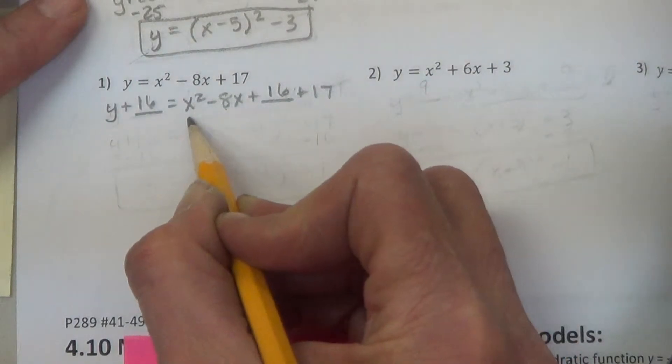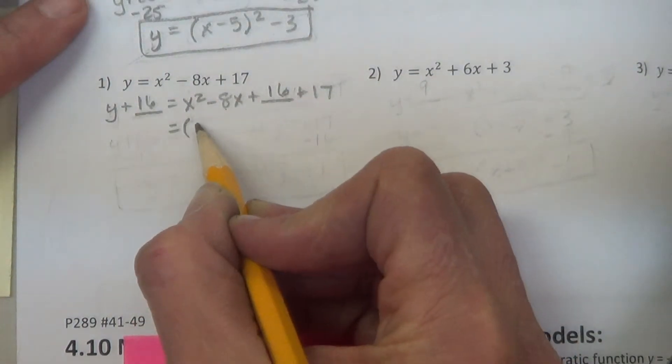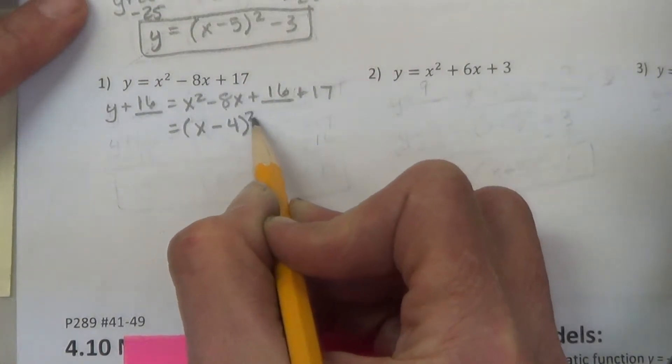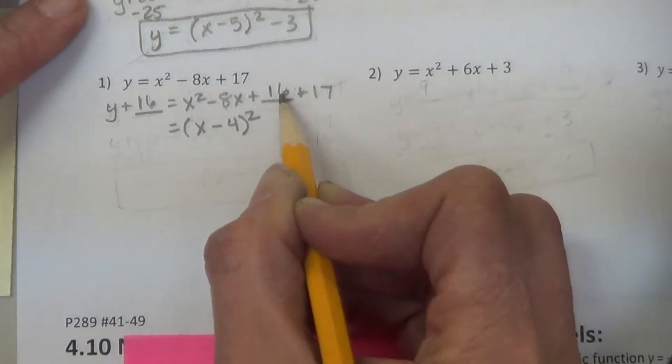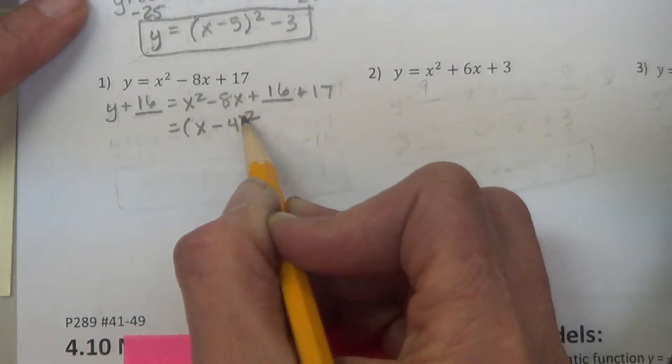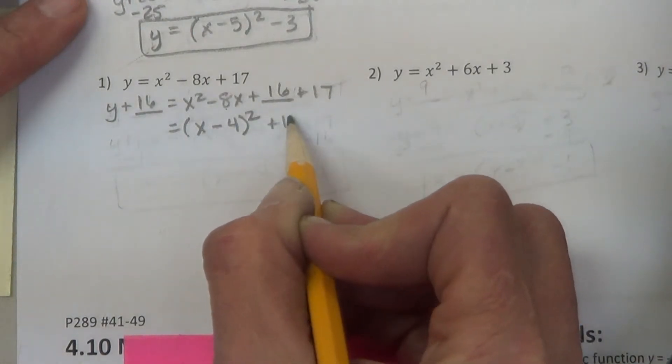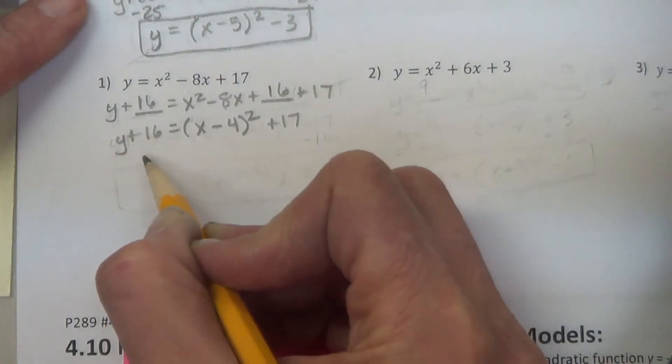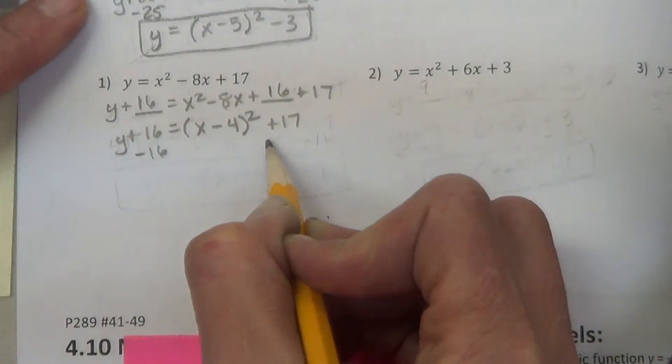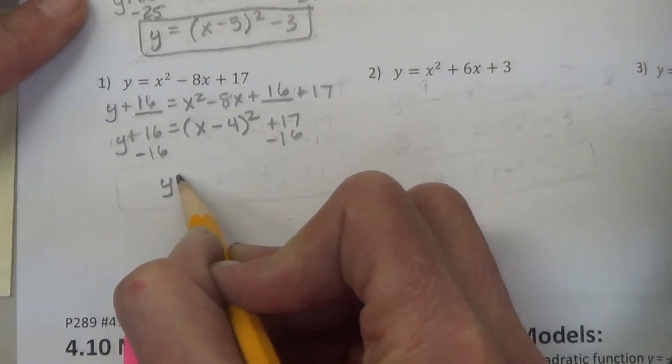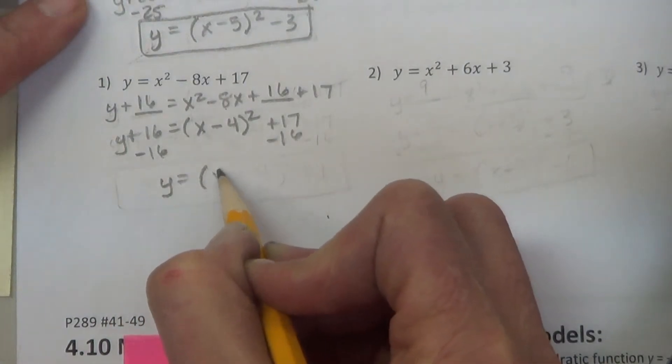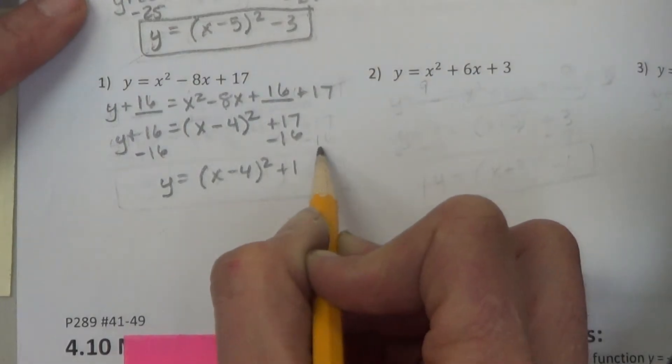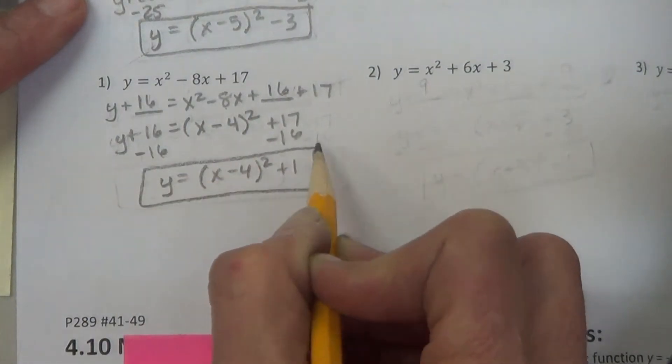This trinomial factor would be x minus 4 squared. Take the root of the first, the root of the last, the sign of the middle, and then square it. Now we subtract 16 from each side to get that y alone. And we have y equals x minus 4 squared plus 1 for vertex form.